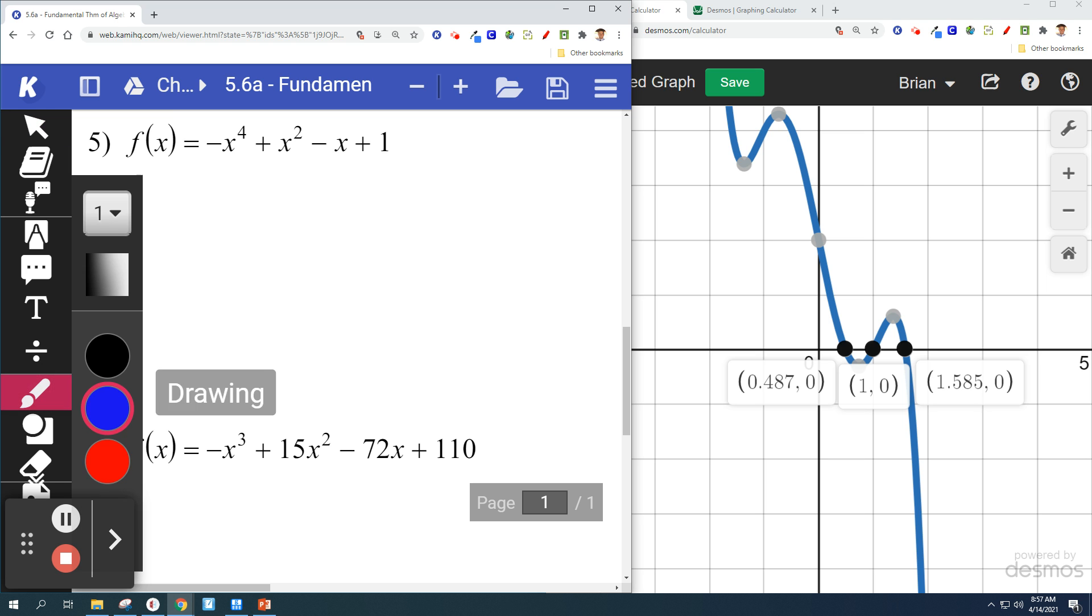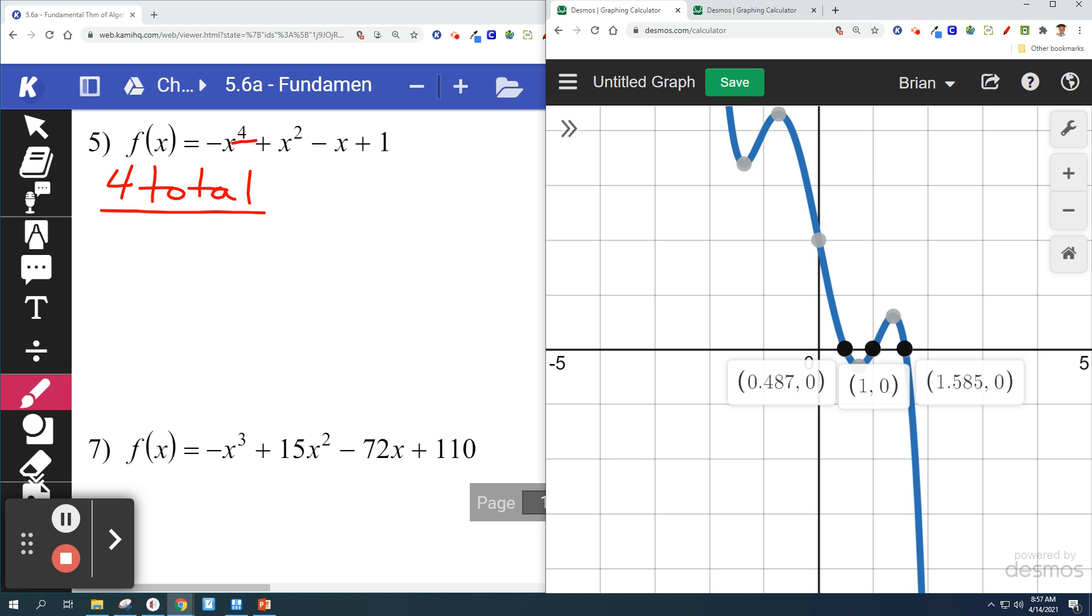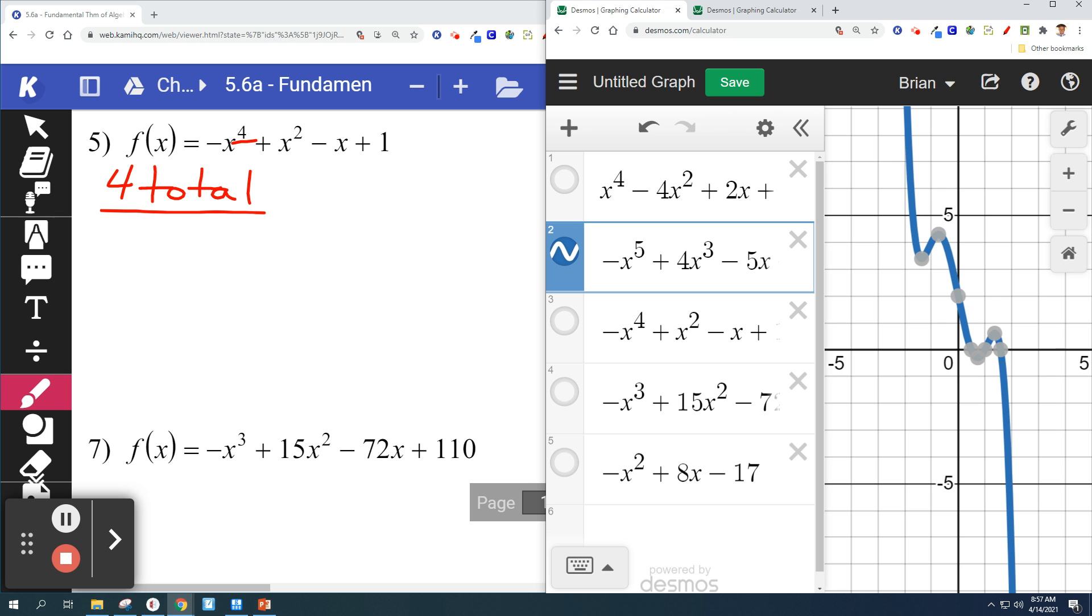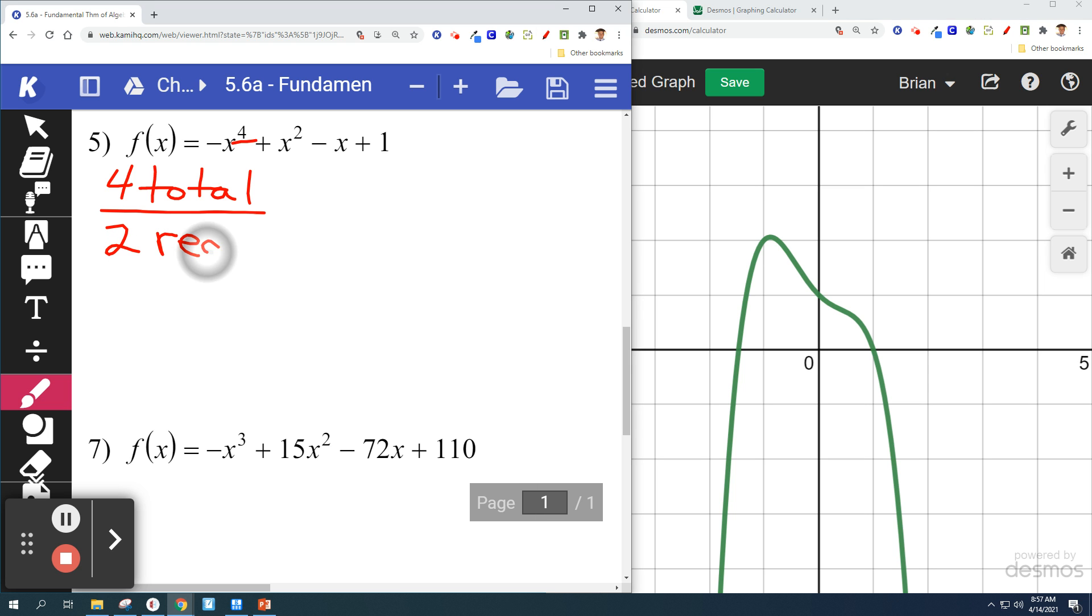So we can do another one. We can see because of that degree, because of that number, there are four total zeros. Let's look at the graph, though. How many real solutions are there? Two. That's right. And you can tell because of the x-intercepts.